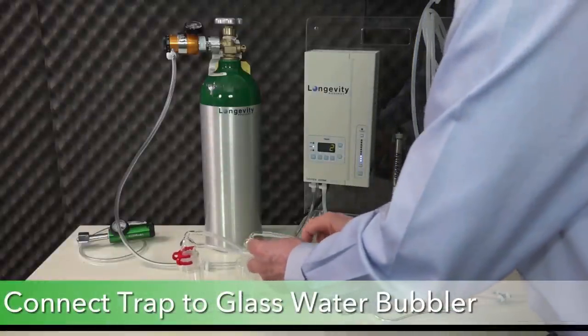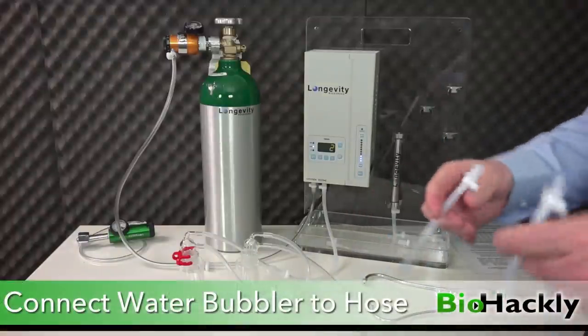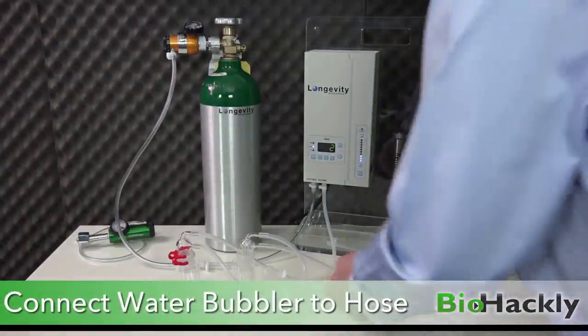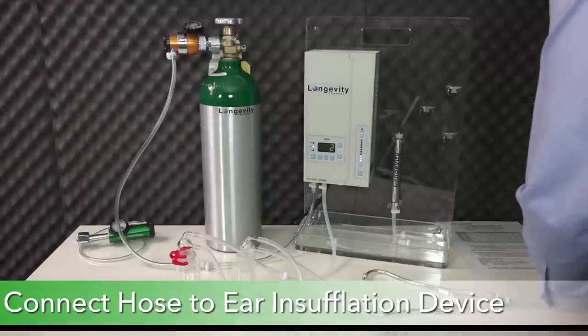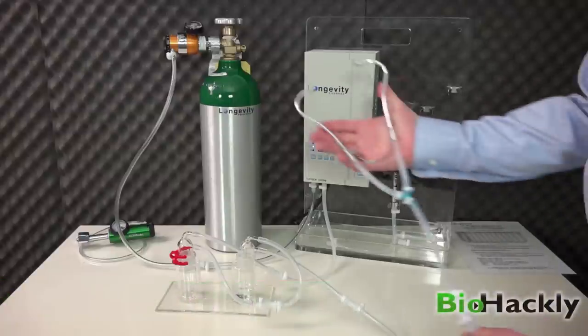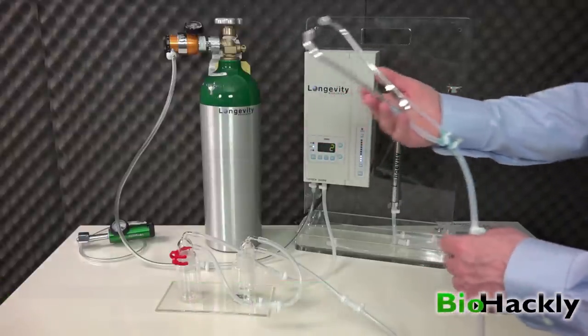Now we'll take the bottom and run this from the bottom of the trap to the top of the water bubbler. We'll take this long hose and run it from the bottom of the water bubbler and connect it to the end of the unit for doing ear insufflation. It's all connected up.